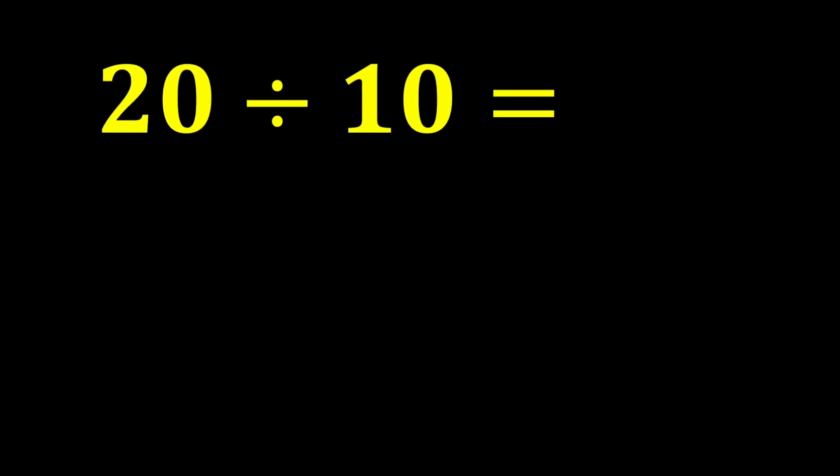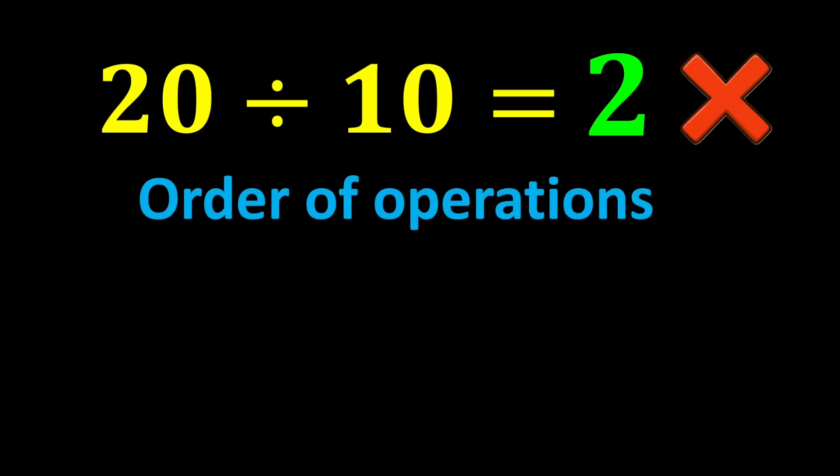In the end, 20 divided by 10 gives us 2, which is our final answer. But this answer is not correct because we did not follow one of the most important rules in mathematics called the order of operations.